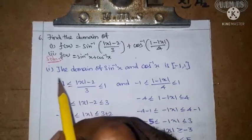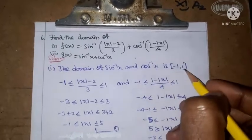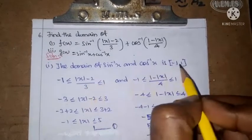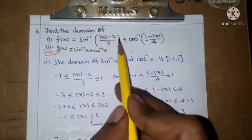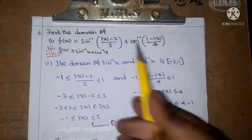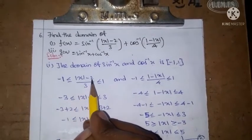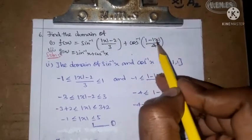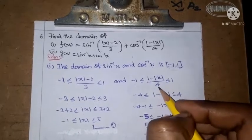Solution. For the first sub-part, the domain of sin inverse x and cos inverse x is minus 1 to 1. So sin inverse and cos inverse both require their arguments to lie in the interval minus 1 to 1. Similarly, minus 1 is less than or equal to 1 minus modulus of x by 4, less than or equal to 1.